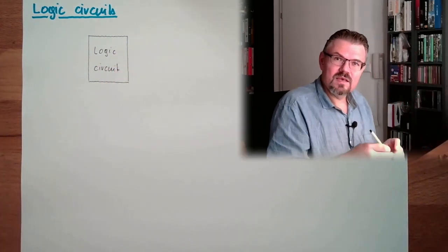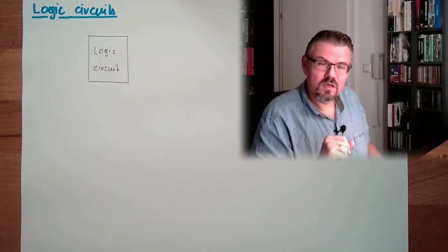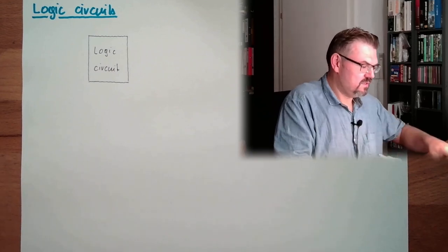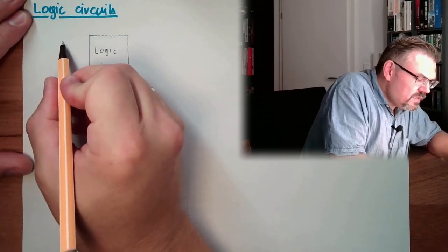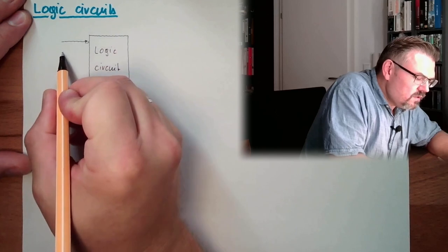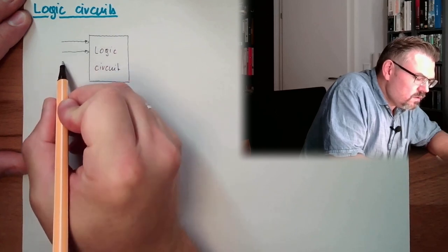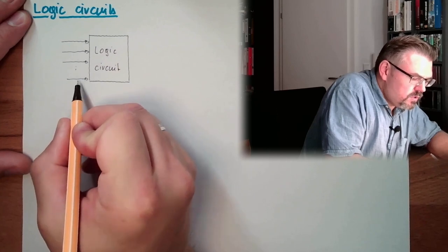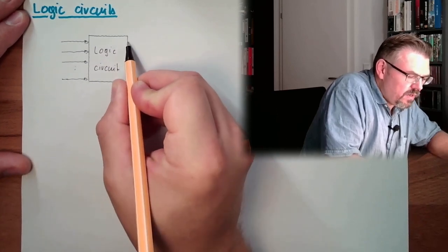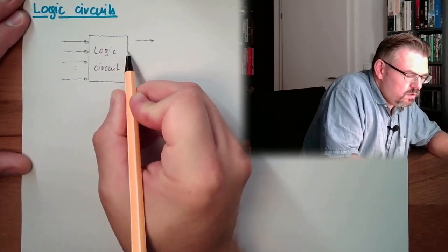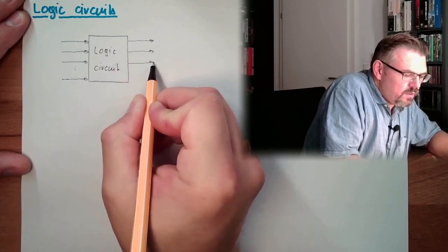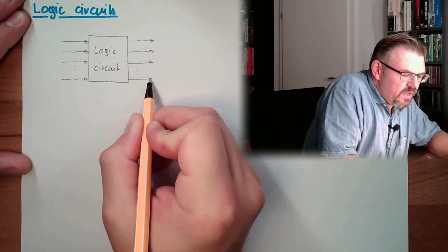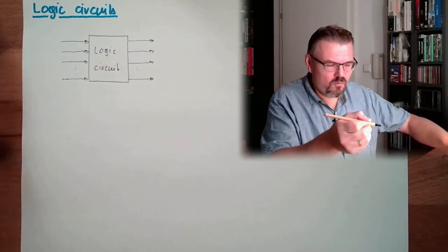However, what we do see is that we have a bunch of input and a bunch of output signals. So there are input signals into our logic circuit. How many is not defined. It can be a number of them. It can be one. And there are output signals as well, not defined how many.